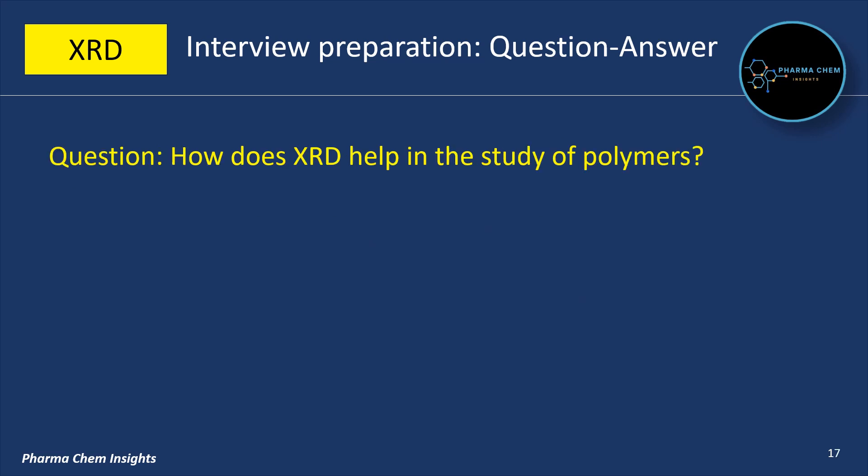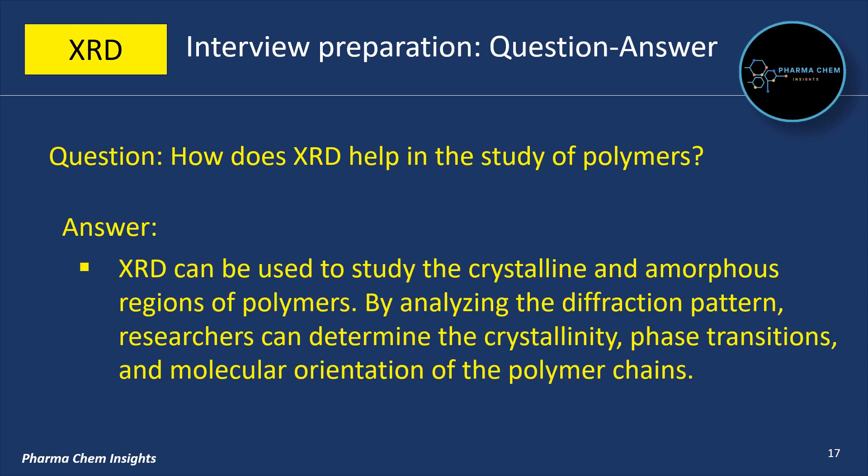Next question: how does XRD help in the study of polymers? XRD can be used to study the crystalline and amorphous regions of polymers. By analyzing the diffraction pattern, researchers can determine the crystallinity, phase transitions, and molecular orientation of the polymer chains.